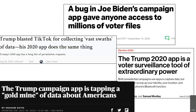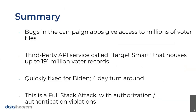The bottom line is that both campaigns' apps rely on a third-party API service called Target Smart, which houses up to 191 million voter records — effectively everybody in the US who's registered to vote. For the Biden app, called Vote Joe, there was a quick 3-to-4-day turnaround from when they were alerted of the issue to when they fixed it. This was a full-stack attack with several authorization and authentication violations, primarily due to the API back end. APIs share information by design, and not enforcing proper authentication on API endpoints can lead to data exposure.